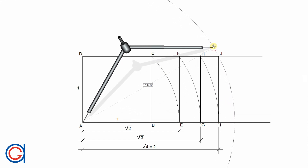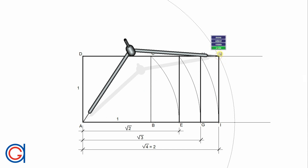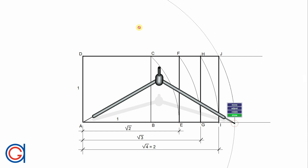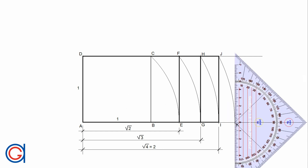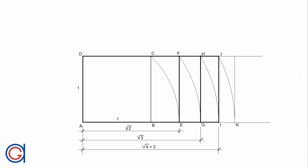To continue, setting the compass on point A and with the radius AJ, the diagonal of the root 4 rectangle, we describe an arc to the right, obtaining a new vertex K. From this we draw a vertical line up, obtaining L, a new vertex. Again, in a thicker line, we will draw the new root 5 rectangle, which is A, K, L, D. You can continue as many times as you want, following this same process, obtaining successive root rectangles.